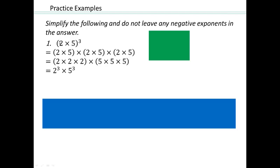So if you have 2 times 5 to the power 3, you can take 2 to the exponent 3 and 5 to the exponent 3. You can always check: that's going to be 8 times 125, which gives you 1,000. We could have gotten 1,000 by just multiplying 2 times 5, which is 10, and 10 to the third is 1,000.